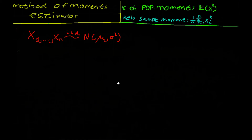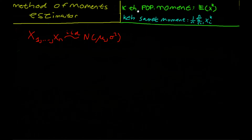Hello guys, this is a follow-up on my videos regarding the method of moments estimator. What we have been doing is estimating certain parameters based on moments, and each time we have set the k-th population moment equal to the k-th sample moment. Those are the definitions of the k-th population moment and the k-th sample moment. The number of moments we need to calculate will be equal to the number of parameters we are going to estimate.